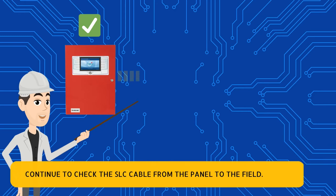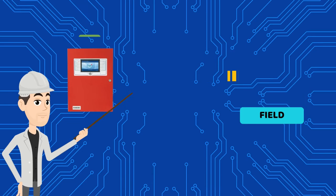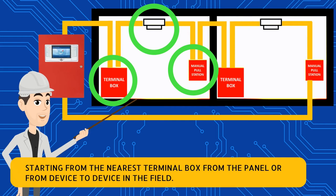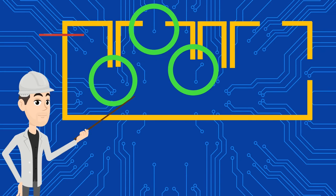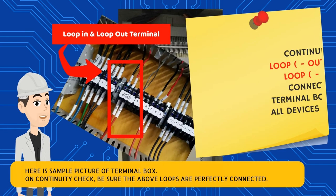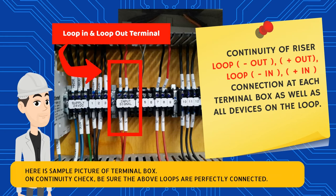If the SLC cable in the panel area has been confirmed to be connected correctly, continue to check the SLC cable from the panel to the field. Perform a continuity check on the SLC line in the field, starting from the nearest terminal box from the panel or from device to device in the field. Here is a sample picture of a terminal box. Once on the continuity check, be sure the loops are perfectly connected.